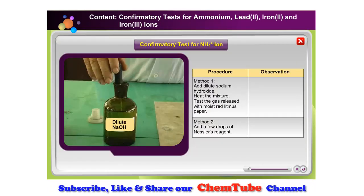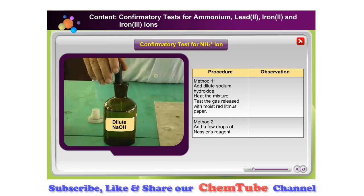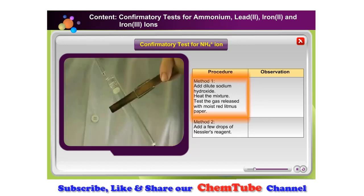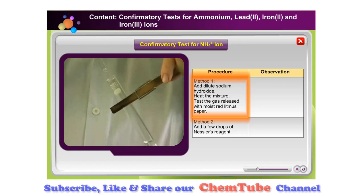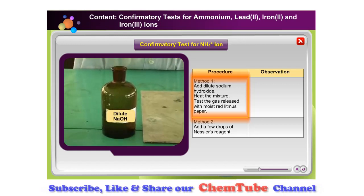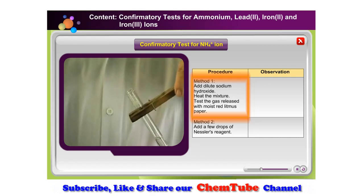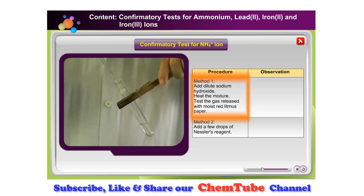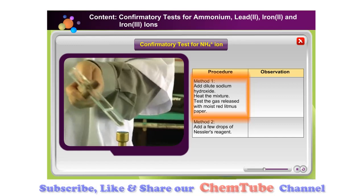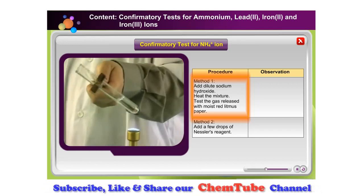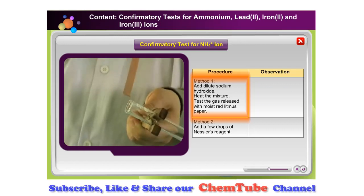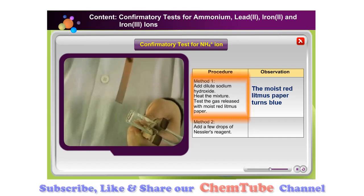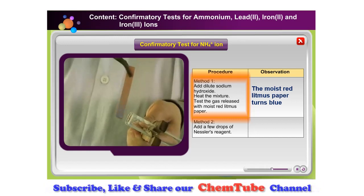There are two methods to confirm the presence of ammonium ions. The first method is as follows: pour about 4 cm³ of dilute sodium hydroxide solution into the test tube with a solution containing ammonium ions. Heat the mixture and test the gas released with a moist red litmus paper. What gas do you think is produced?